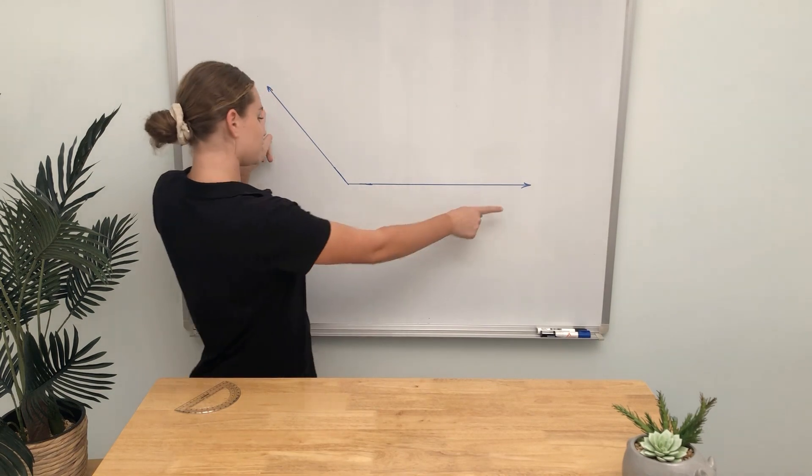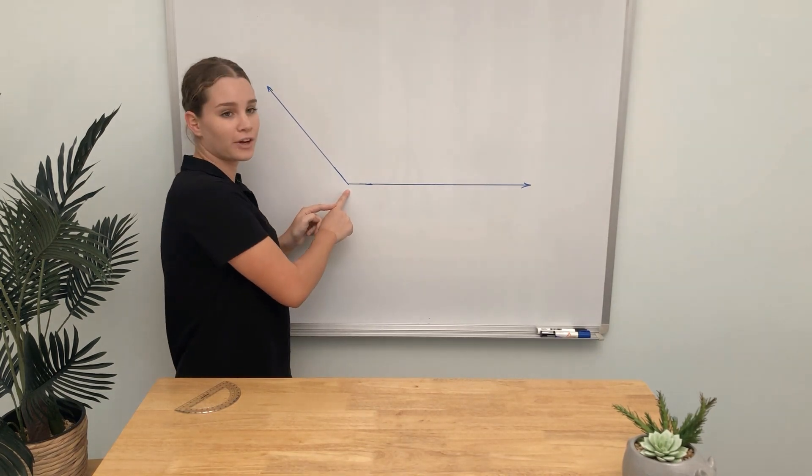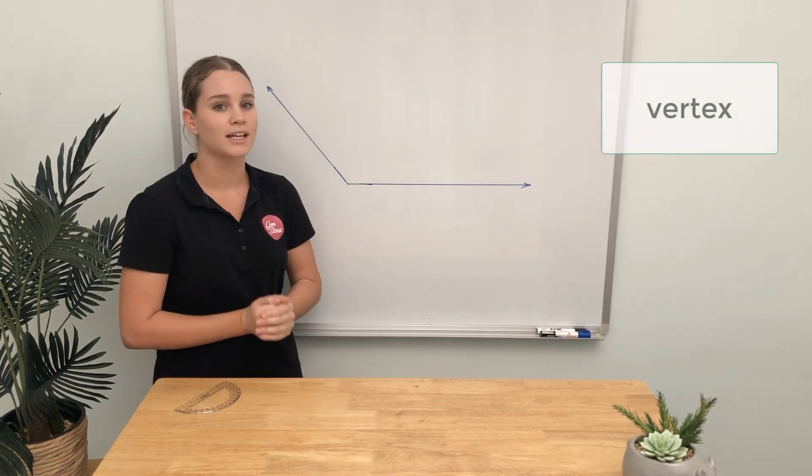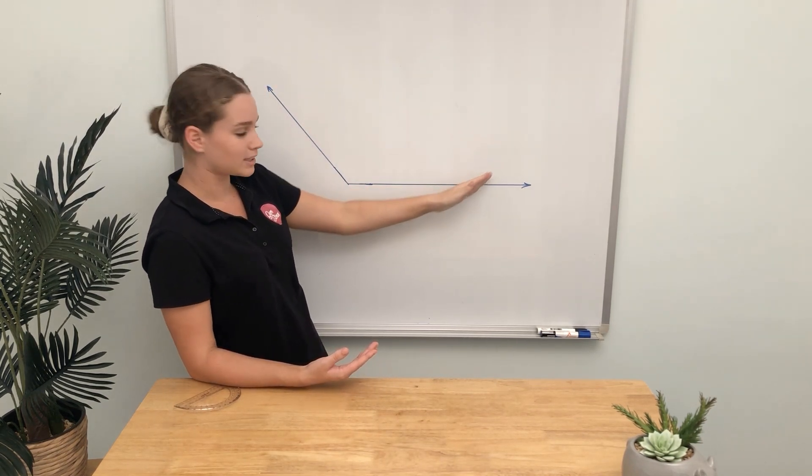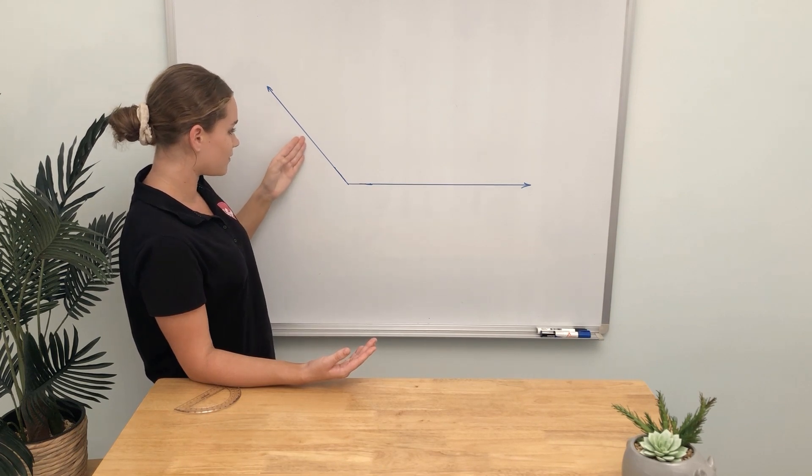An angle has two lines that connect to create a vertex. Here we have two angles: one goes like that, and one comes all the way around over here.